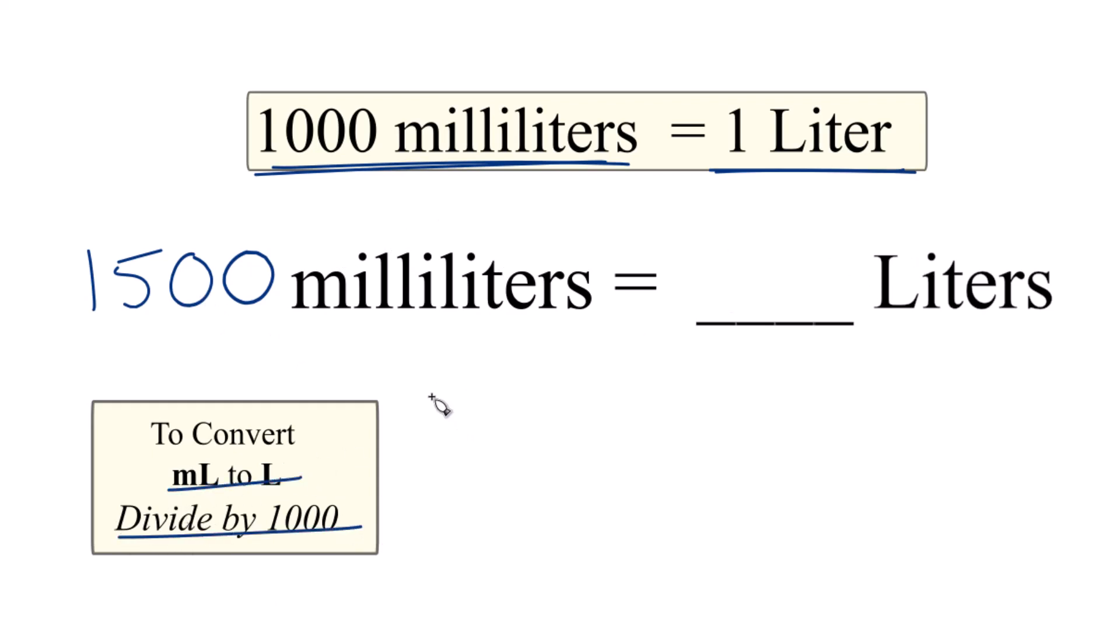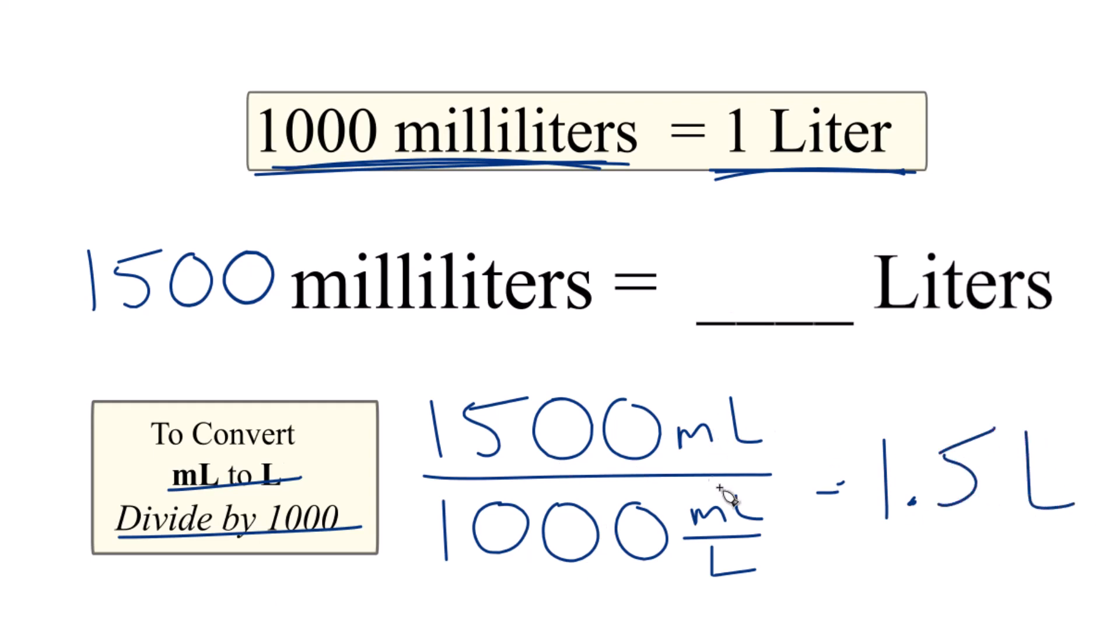And we divide that by 1000. That 1000 - there are 1000 milliliters in a liter - so we call this milliliters per liter. So 1500 divided by 1000 is 1.5, and that will be liters because we have milliliters on top and bottom, they cancel out, and we have liters.